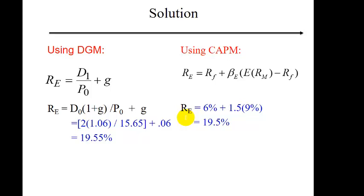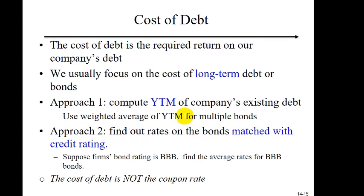Did you get them both right? We have done how to find the cost of capital for all-equity firms — essentially finding the cost of equity. Now let's turn to firms with a mixture of debt and equity. How do you find the cost of debt paid by the company? There are two approaches. One is to find the yield to maturity of the bonds issued by the company; in the case of multiple bonds, use the weighted average.